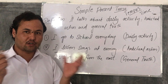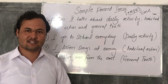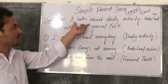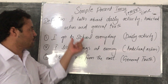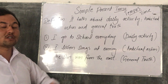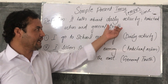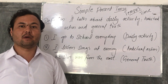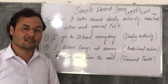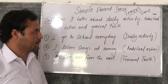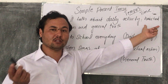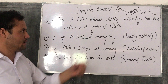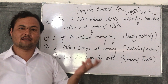This tense talks about daily activity, habitual action, and general truth. Daily activity refers to all those activities that we perform every day. Habitual action is the action that we adopt by our habit. General truth refers to things that are universally true.